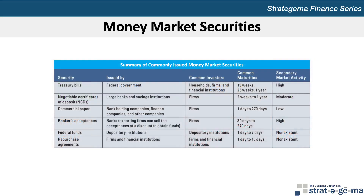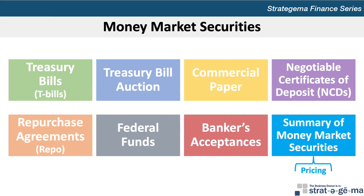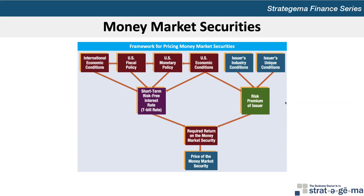This exhibit summarizes the various types of money market securities. When such securities are issued to obtain funds, the type depends on whether the issuer is a treasury, a depository institution, or a corporation. The prices of money market securities change in response to a change in the required rate of return, which is influenced by the risk-free interest rate and the perceived credit risk over time. This exhibit identifies the underlying forces that can affect the short-term risk-free interest rate, the T-bill rate, and the risk premium, and therefore influence the required return and ultimately the prices of money market securities.